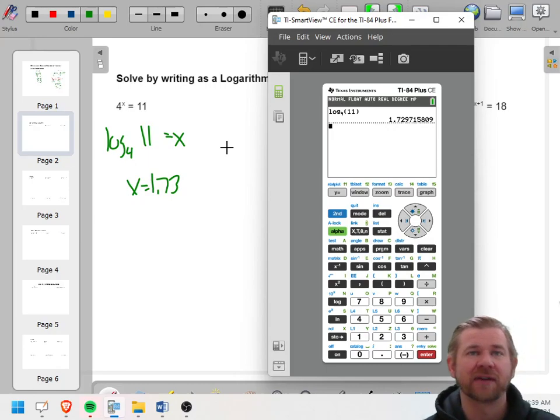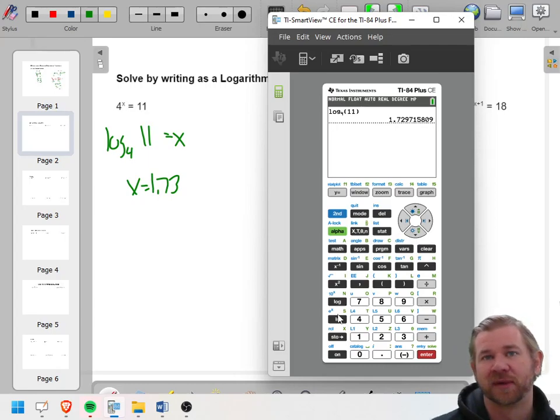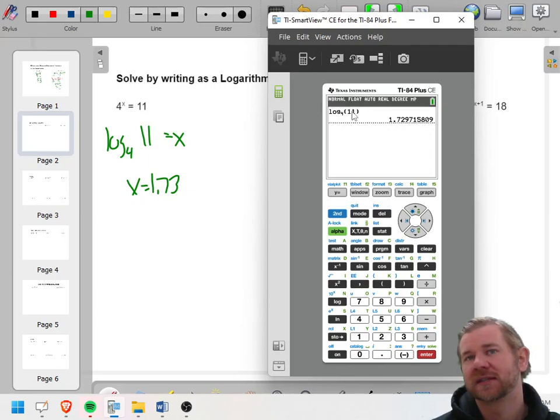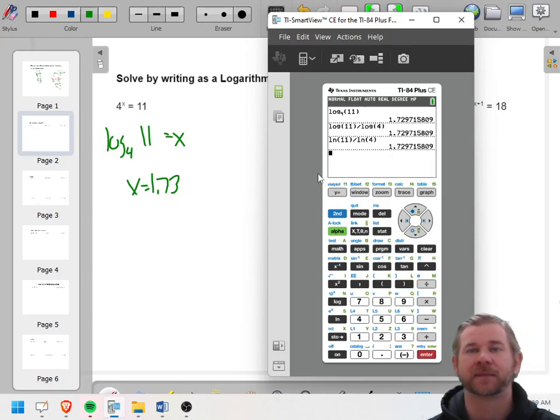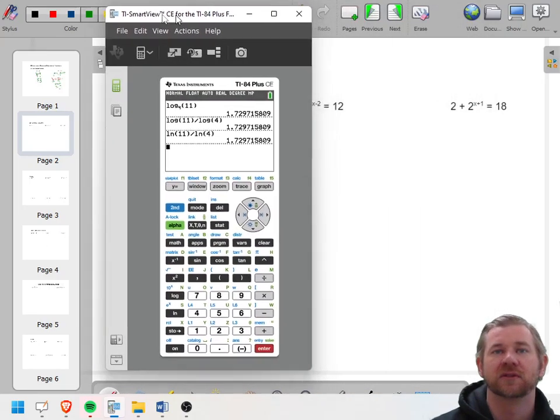Now, if you don't have a fancier calculator, you need to learn the change of base formula. And every calculator has a log and a natural log button. The change of base formula says, if you take the log of the argument and divide by the log of the base, you will get the same answer. The log of the argument, 11, divided by the log of the base, we will get the same thing. And the cool thing is, it doesn't matter which of these bases you use, you can use the log or the natural log, you're going to get the same answer. The log of the argument over the log of the base, we get the same thing. It doesn't matter how you're using it, you just need to know your tool.